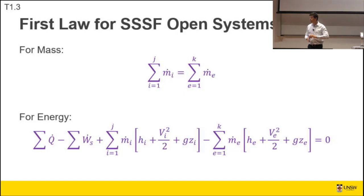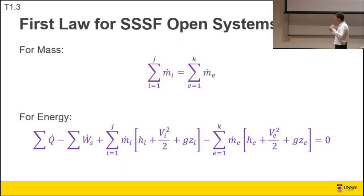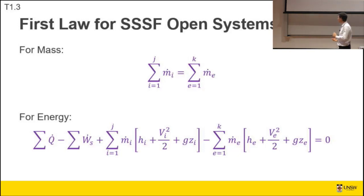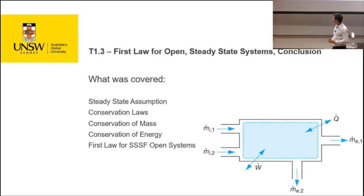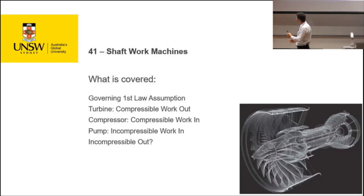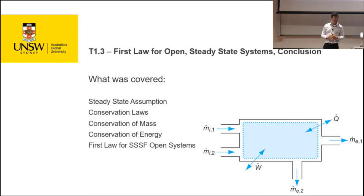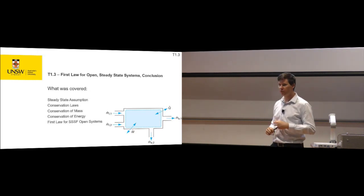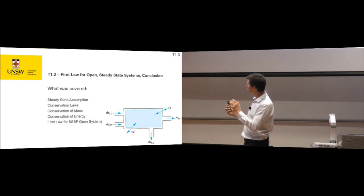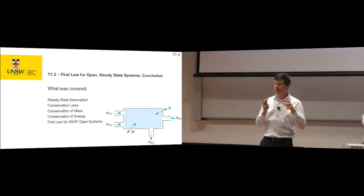Generally we can make simplifications: velocity unimportant, potential energy unimportant, system is adiabatic so no Q term. It's not bad to know where things come from and know what simplifications you're making — if you know what simplifications you're making, you can judge whether they're reasonable. The rest of today and probably tomorrow as well is talking about devices that operate on this steady-state, steady-flow open system principle.